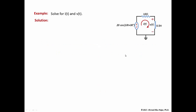Let's look at the circuit here. This is a very simple circuit. We have a sinusoidal cosine voltage source connected to an RL circuit — a resistor in series with an inductor — where the resistor value is 10 ohms and the inductor value is 0.5 henrys.